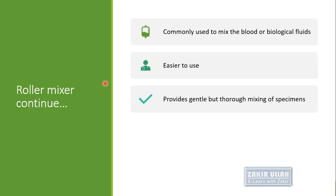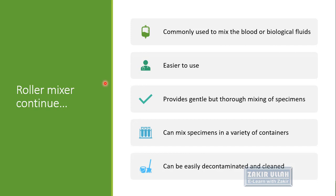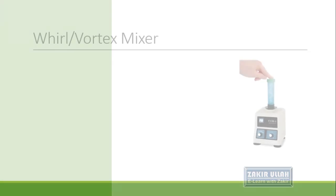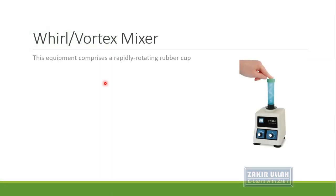The roller mixer is easy to use and provides gentle mixing so the whole specimen is easily mixed. It can mix specimens in a variety of containers — small tubes, large tubes, and universal test tubes. It is also easy to decontaminate and clean; if spillage occurs it can be easily cleaned.